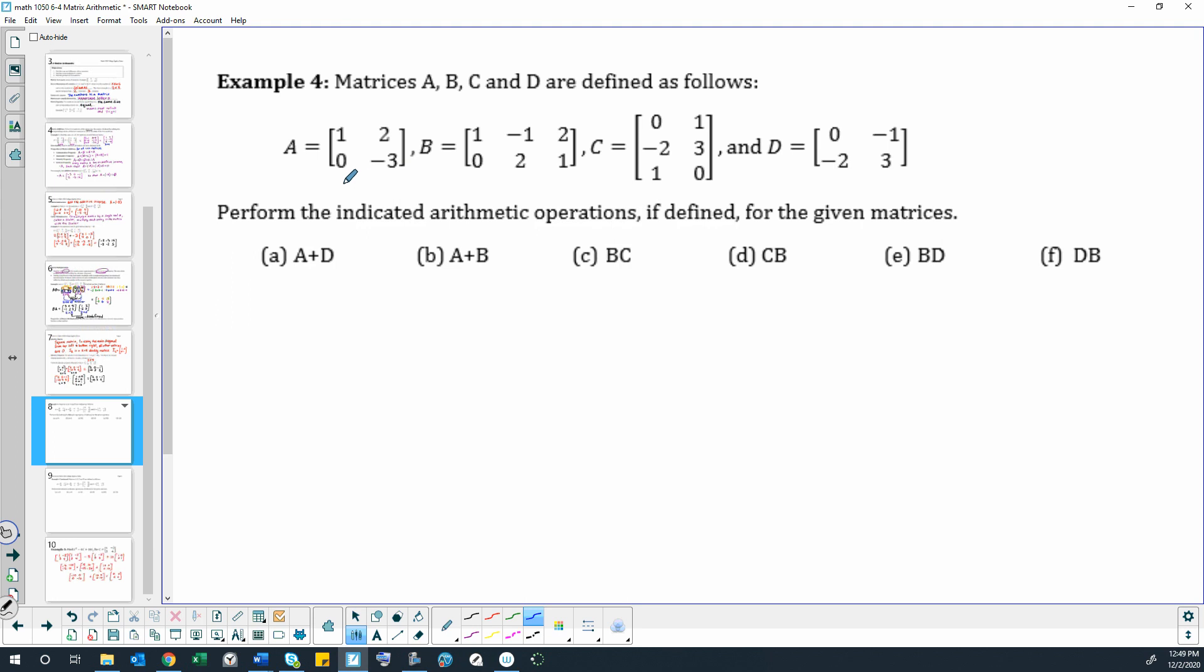Okay, so we have matrix A. First I'm going to see what dimensions everything is. So this is a 2 row by 2 column. This one is 2 by 3. This one is 3 by 2. And this one's another 2 by 2. We have all these different operations we're going to do with each of these matrices if we can. It's not always possible to add matrices if they're not the same dimensions or multiply them if they don't match up the rows and columns like they need to.